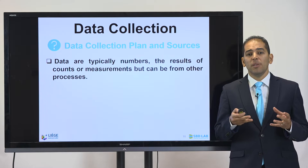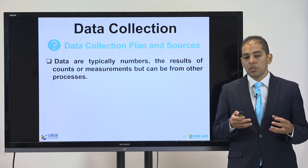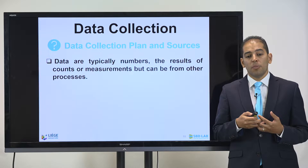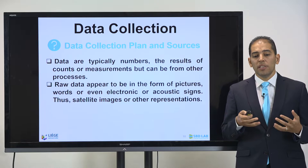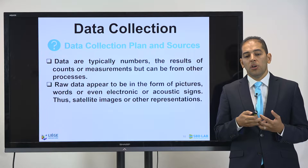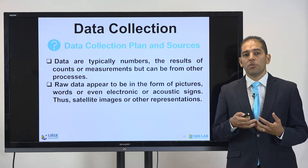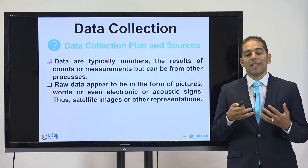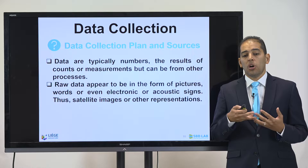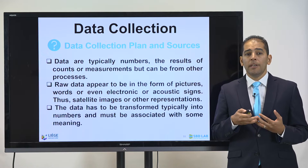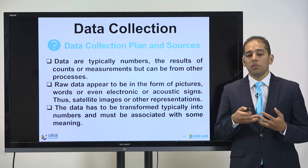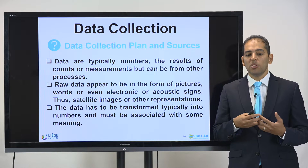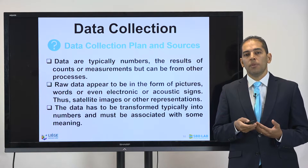Data are typically numbers and the results of counts or measurements, but can also come from other processes. Raw data can appear in the form of pictures, words, or even electronic or acoustic signs — such as satellite images or other representations. The data has to be transformed typically into numbers and must be associated with some meaning.